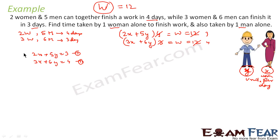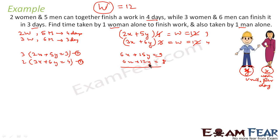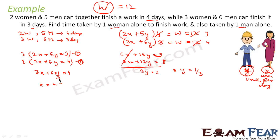To solve, I multiply the first equation by 3 and the second by 2 so the x terms cancel. I get 6x + 15y = 9 and 6x + 12y = 8. Subtracting gives 3y = 1, so y = 1/3. Substituting y back: 3x + 6 × (1/3) = 4, so x = 2/3.